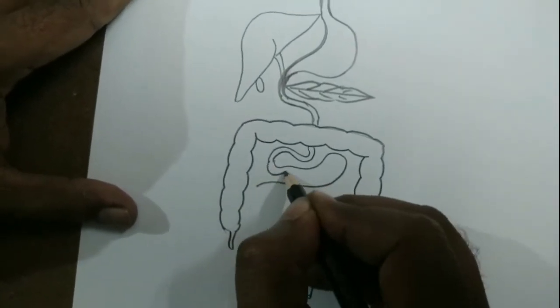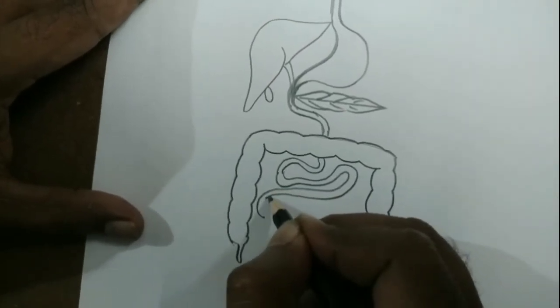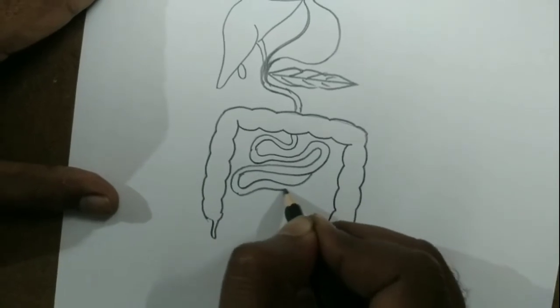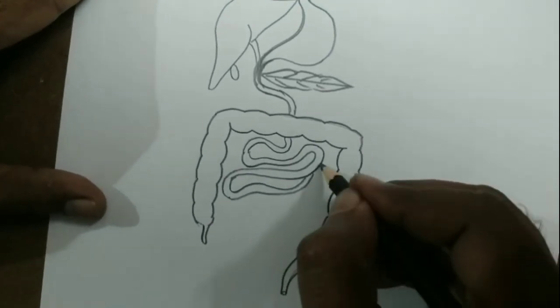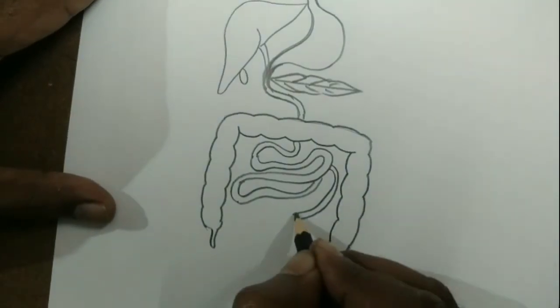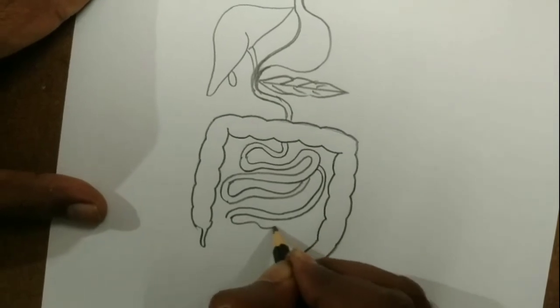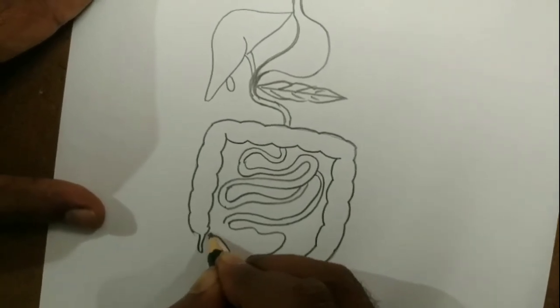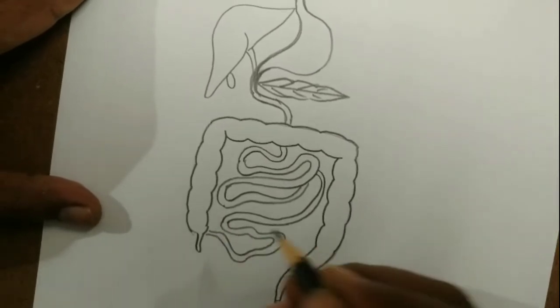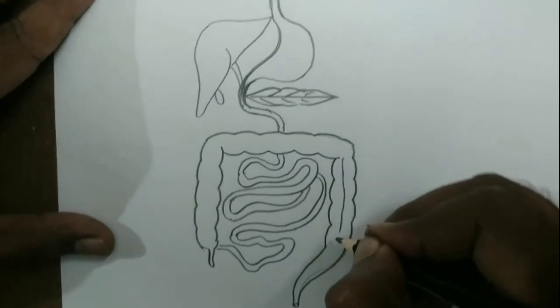It connects the duodenum to the large intestine. It is highly coiled, but you can draw like this for an easy diagram. You connect it to the large intestine like this.